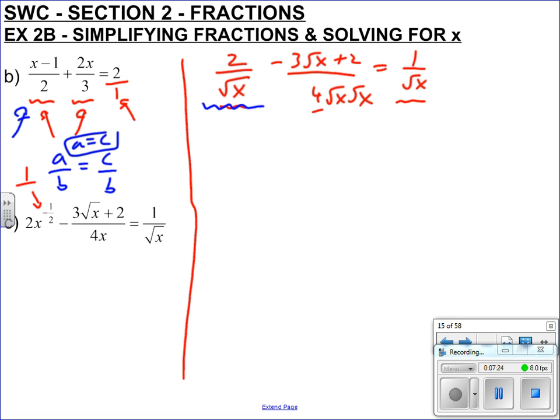So 4 root x all times by 2, this one's all good, this one needs a 4 root x. So 4 root x, 4 root x, if you do it to the top you've got to do it to the bottom. And now the denominators are the same, so I can put it all together.